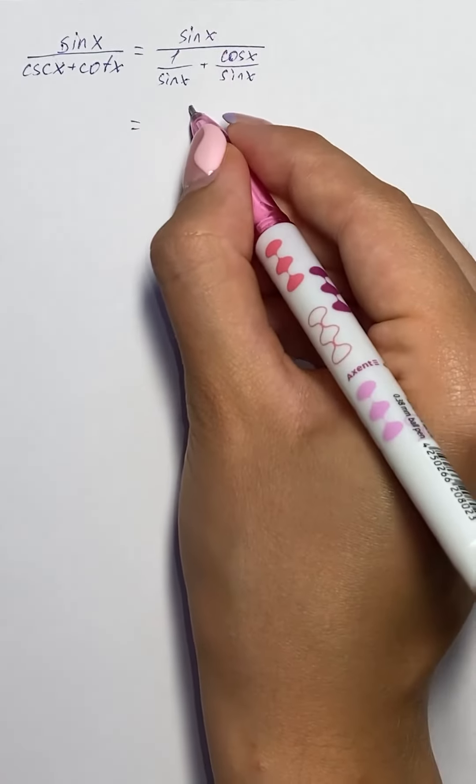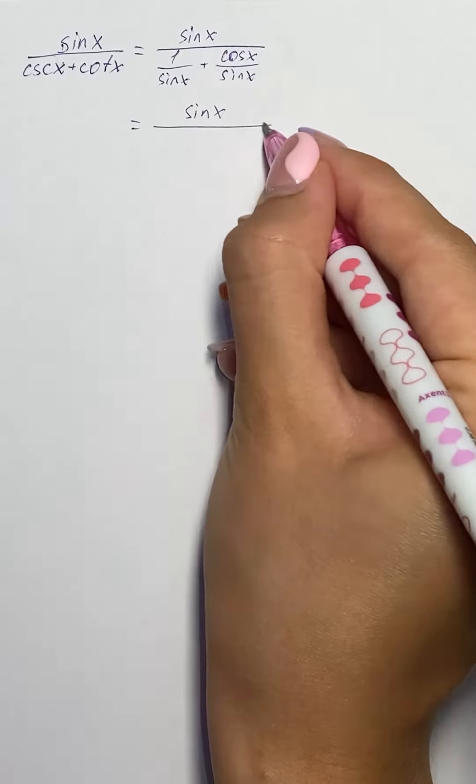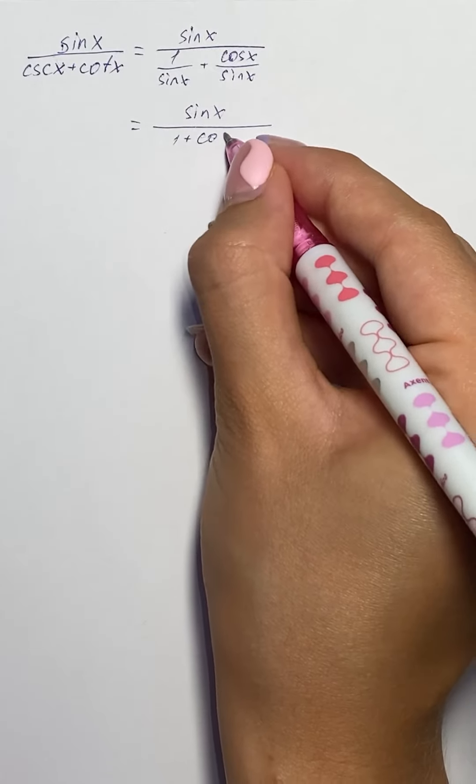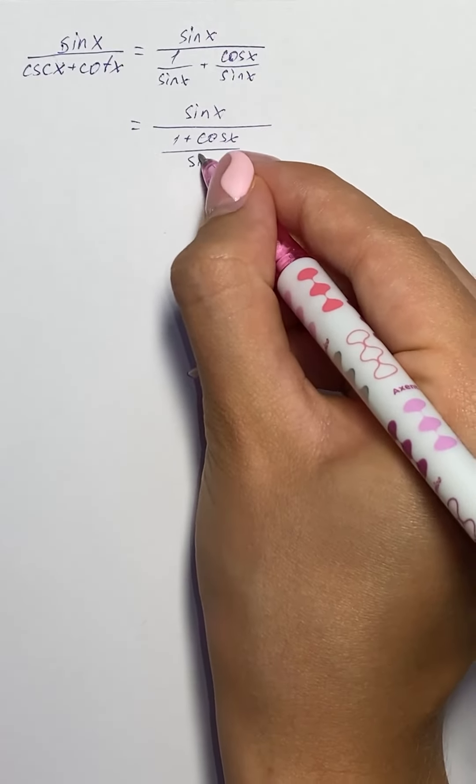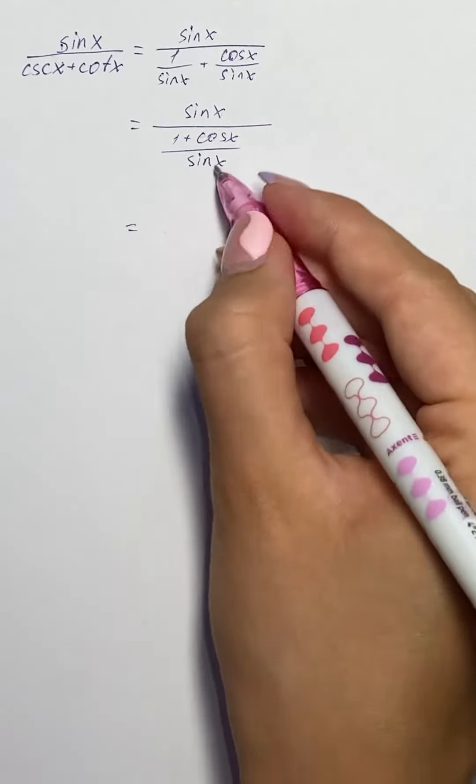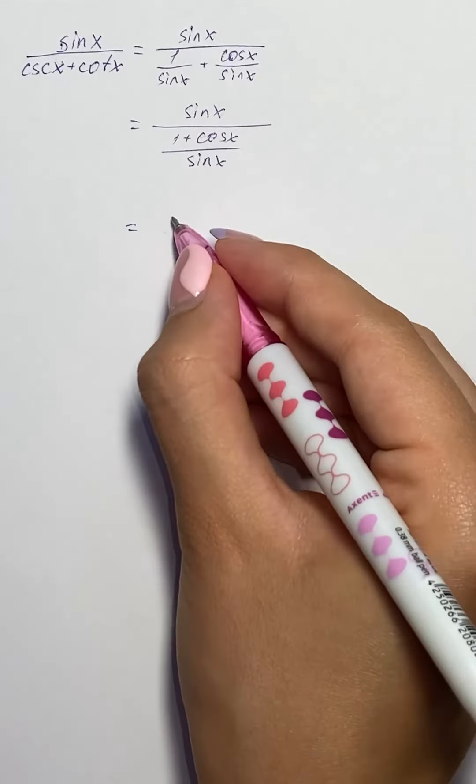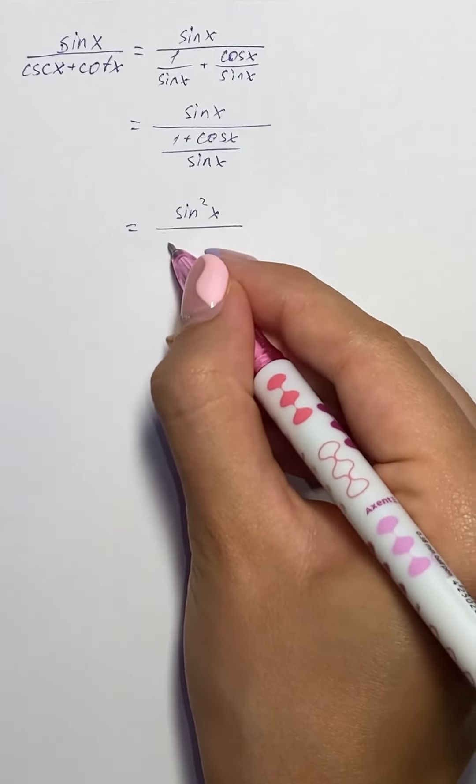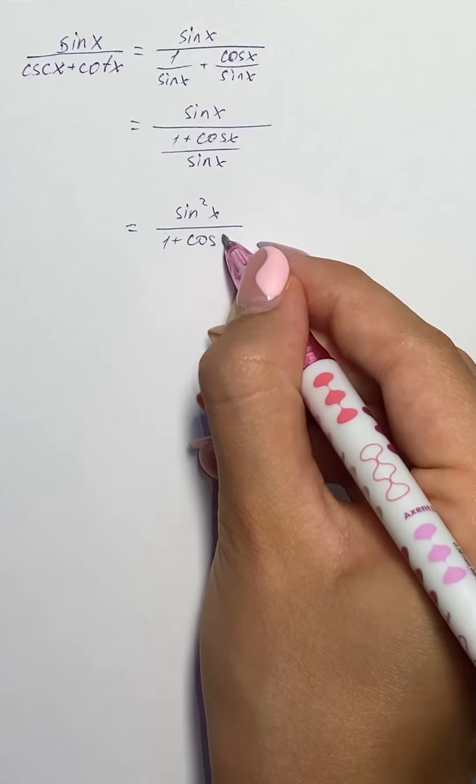And now we have sine of x over 1 plus cosine of x over sine of x. And now we can put sine of x in the numerator, so we have sine squared of x over 1 plus cosine of x.